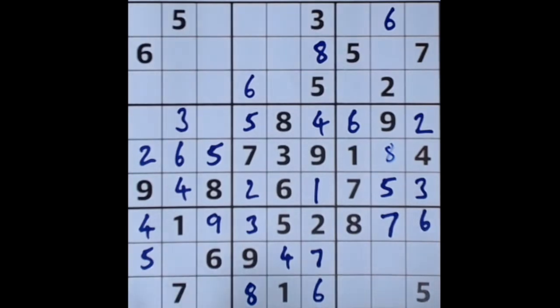8 blocks across this row here so that's 8 there. The missing numbers are 2 and a 3. This 2 stops this from being a 2 so the 2 goes there and the 3 goes there.